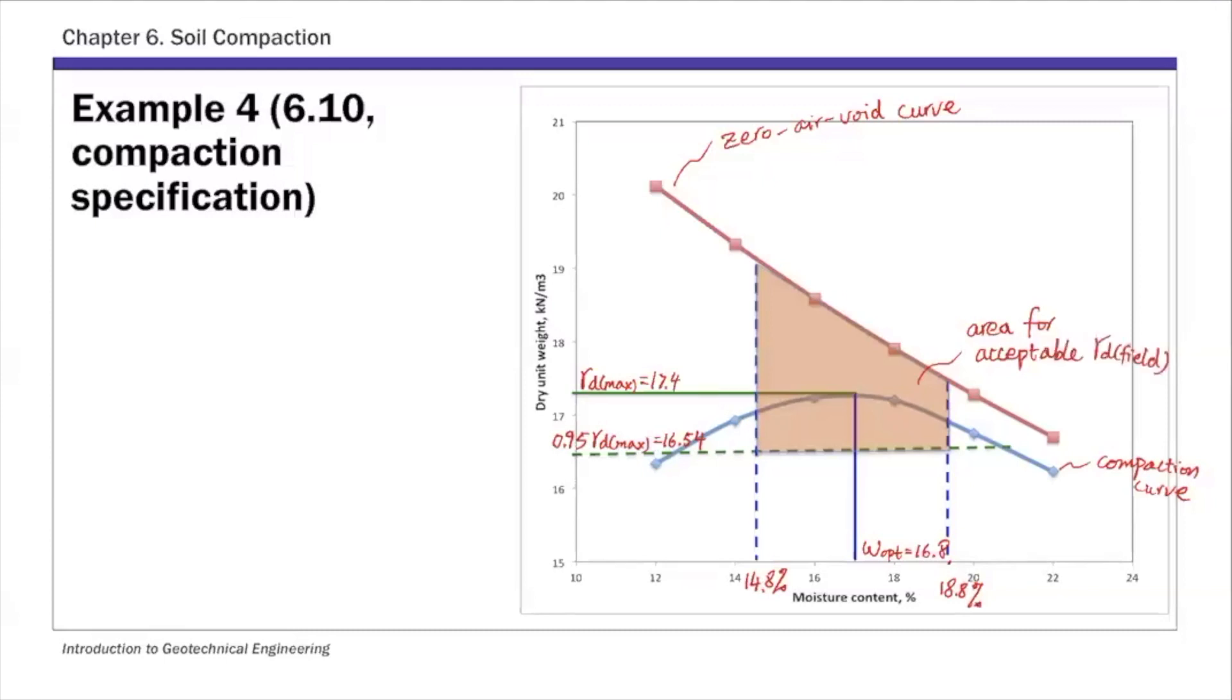In this area, you meet both 95% or more gamma d, and you also meet the plus minus two percent of moisture content. And also notice there's an upper bound there that's bounded by the zero air void.